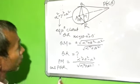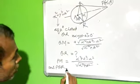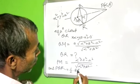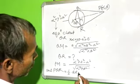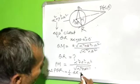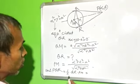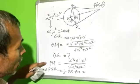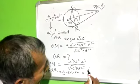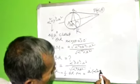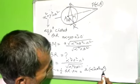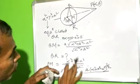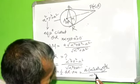Area of triangle PQR equals half into QR into PM. Substituting QR and PM, the answer is: a into alpha square plus beta square minus a square, to the power 3 by 2, divided by alpha square plus beta square.